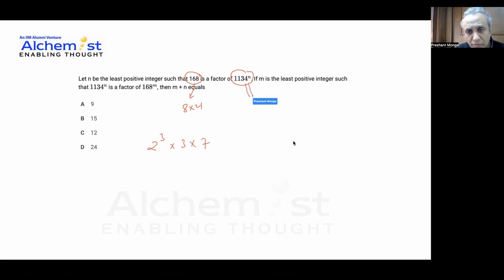So 1134 will be 2, then there is 567, that is 81, times 3 to the power of 4 into 7. So this is 1134.